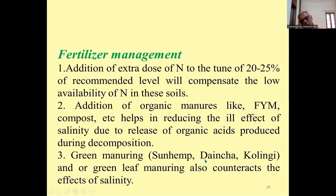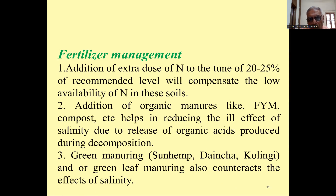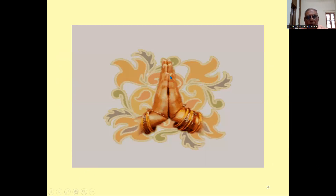Green manuring with sunnhemp, dhaincha, and malingi also counteracts the effects of salinity. In saline or alkaline soil, you can grow dhaincha or sunnhemp — dhaincha is more suited for these soils. We have to incorporate green manure for improvement of saline alkaline soil. Thank you very much. If you have liked my video, please subscribe.